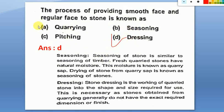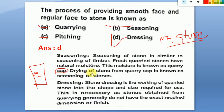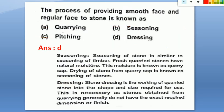To understand related terms: seasoning of stone means removing the moisture from the stone or timber. The moisture present naturally is called sap. Drying up a stone from the quarry by removing sap is known as seasoning. Dressing means giving the perfect shape and size to the stone.